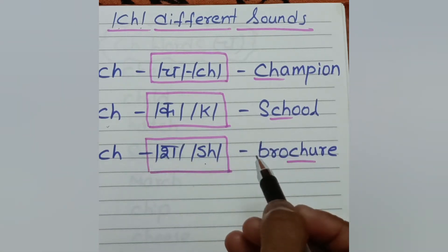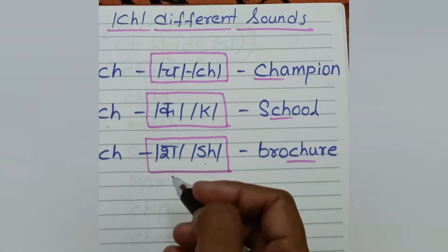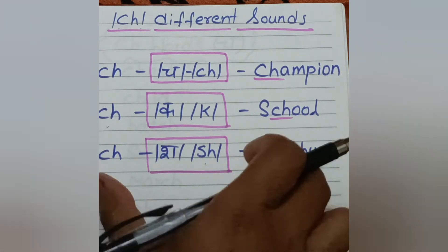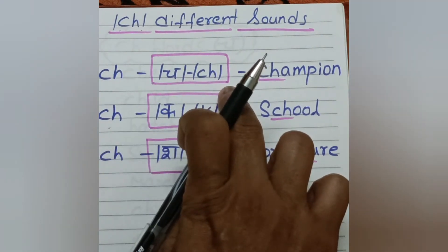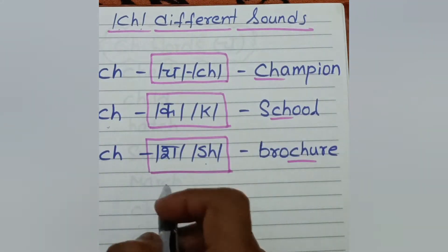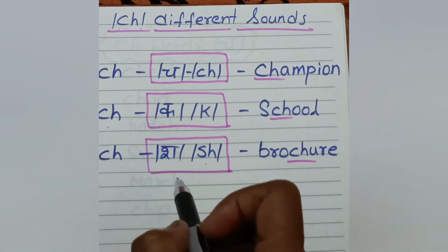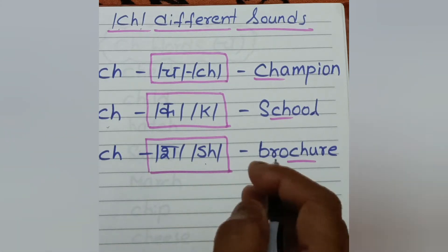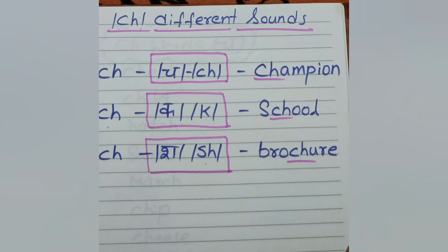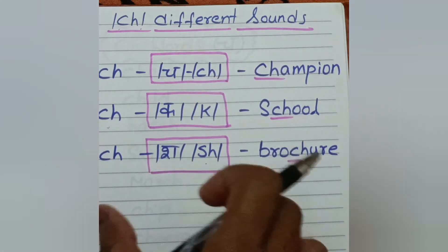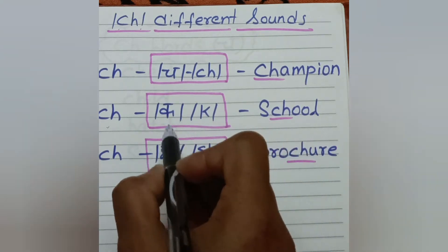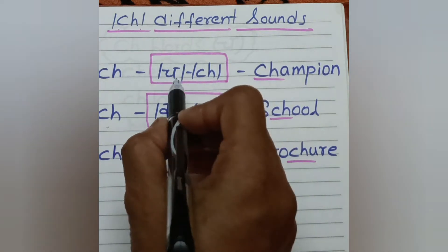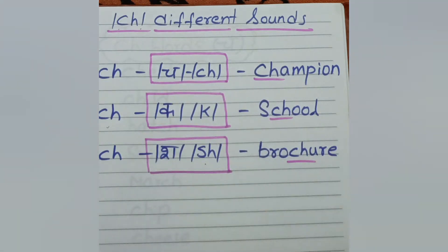And in higher classes, they learn the other sounds. So basically for younger children, we teach CH sound. There are phonic rules and there are exceptions also. Children by themselves understand where to use SH sound, where to use K sound, where to use CH sound once they start reading in higher classes.